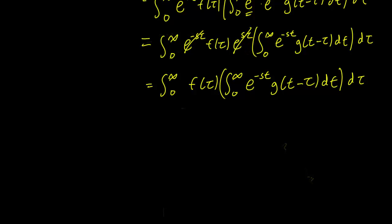And as a final step, this integral is, the inside integral is an integral with respect to t, and little f is a function of τ, so this f(τ) is a constant with respect to t, so we can bring it inside the integral. So now we have integral of f(τ) e^(-st) g(t-τ) dt dτ.